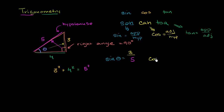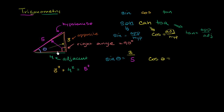Now let's think about the cosine of theta. Cosine is adjacent over hypotenuse. The 3 side is opposite to theta, and the 4 side is adjacent — it forms the vertex where theta is. I want to be clear: this only applies to this angle. If we were talking about the other angle, the sides would swap. So cosine of theta equals 4 over 5.